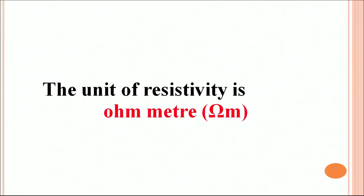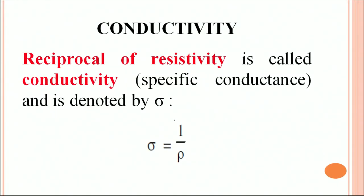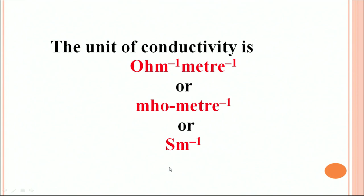The unit of resistivity is ohm·metre. Resistivity depends only on the nature of the material and does not depend on the dimensions of the material. Whereas the resistance of a conductor depends not only on the dimensions but also on the nature of the material. If you change the dimensions of the conducting wire, its resistance will change, but resistivity will not change. It is also possible to define another physical parameter called conductivity. Conductivity is the reciprocal of resistivity and is also called specific conductance; we use sigma (σ) to denote it. So σ = 1/ρ. The unit of conductivity is the inverse of the unit of resistivity: ohm⁻¹·metre⁻¹, also called mho·metre⁻¹.